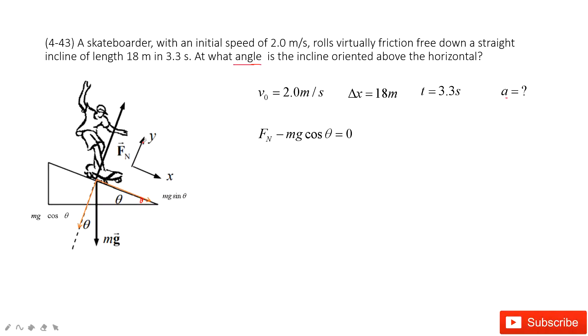Therefore, we can write Newton's second law in the y-component: Fₙ minus mg cos θ equals zero. Because for this person, it didn't move along the y-component. In y-component, it's stationary.